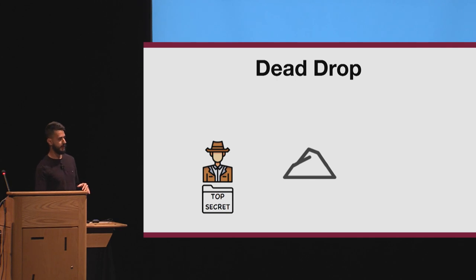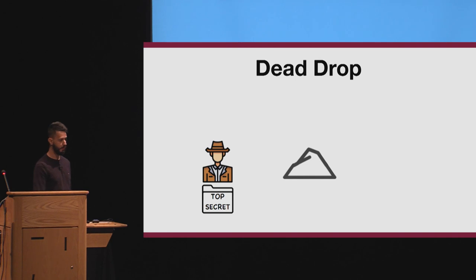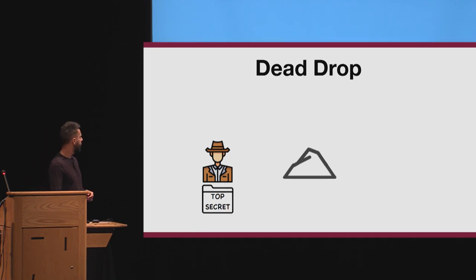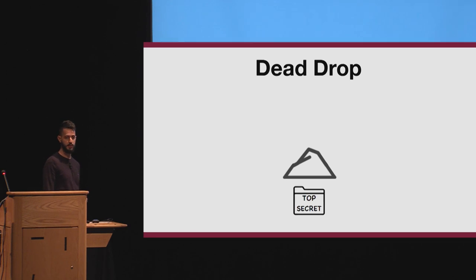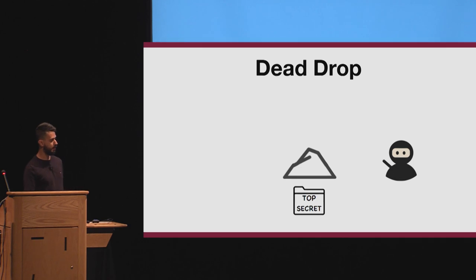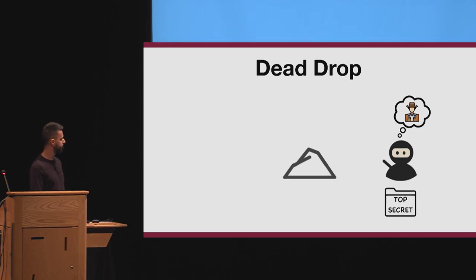There is another technique called dead drop, which is basically a non-interactive live drop. Instead of a public place, there is a secret spot that both parties know. The detective goes there, sees the rock that the other party also knows, puts the top secret information under the rock, and then leaves. At some point the ninja will come, see the rock, and take back the top secret information.